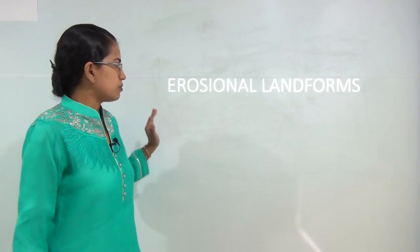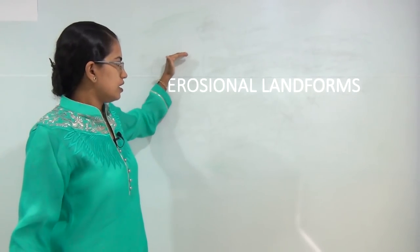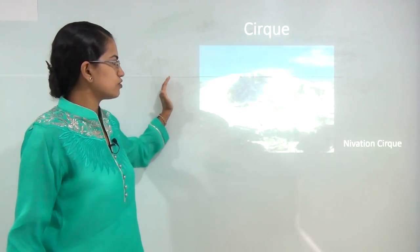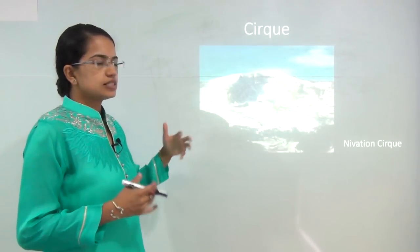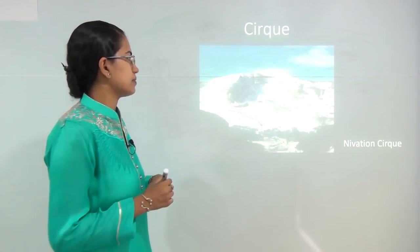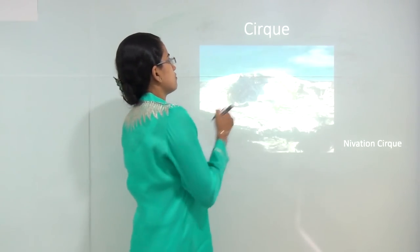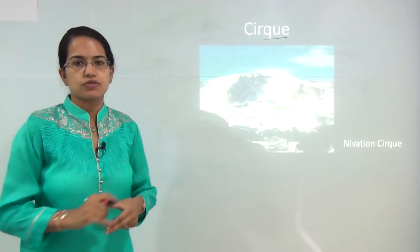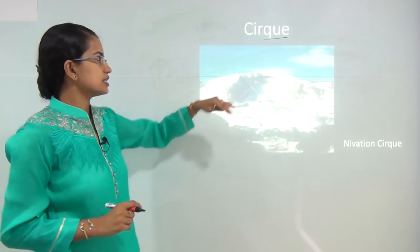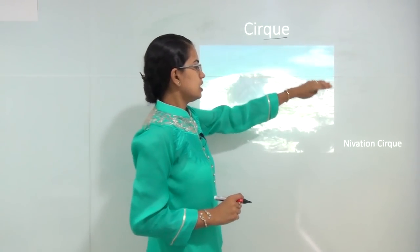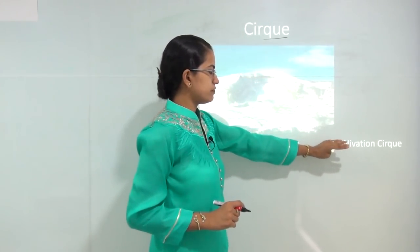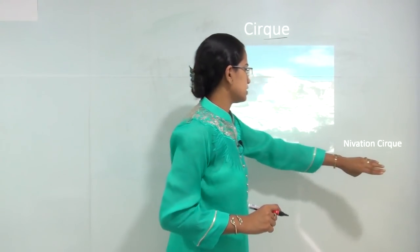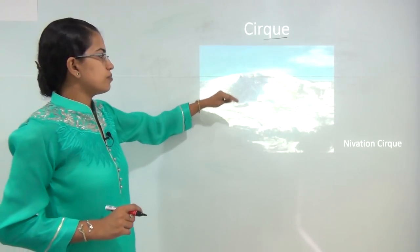Erosional landforms occur when the glacier moves and by the process of glacier movement there is erosional activity taking place. The first erosional landform we will discuss is the formation of cirque. One of its subtypes is the névation cirque.